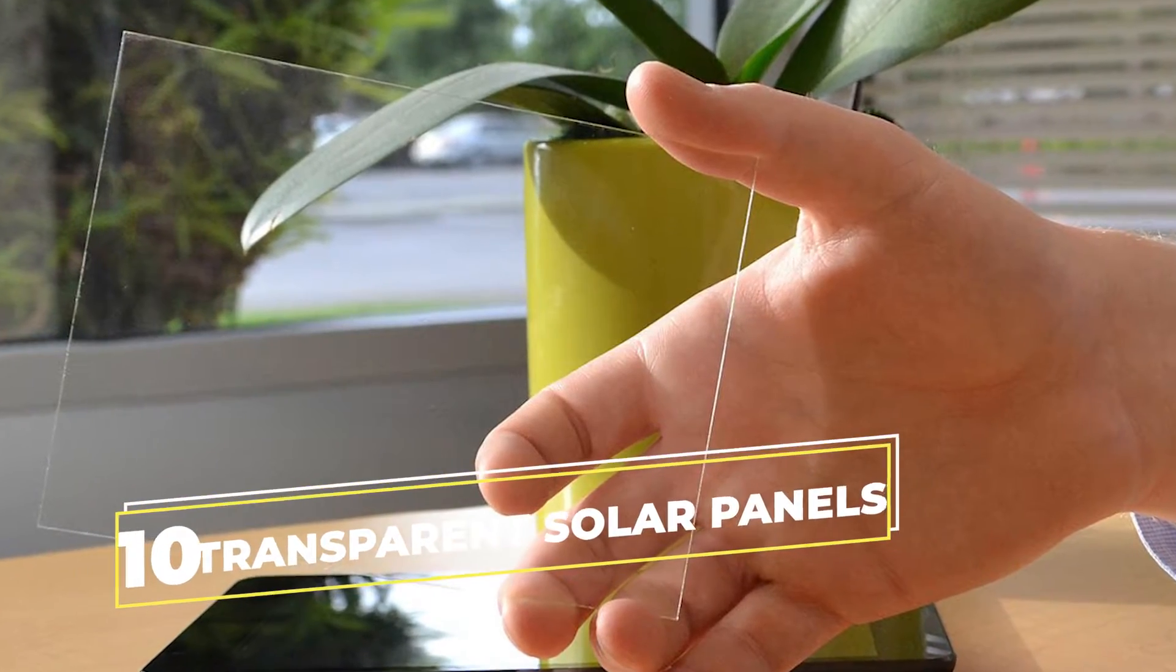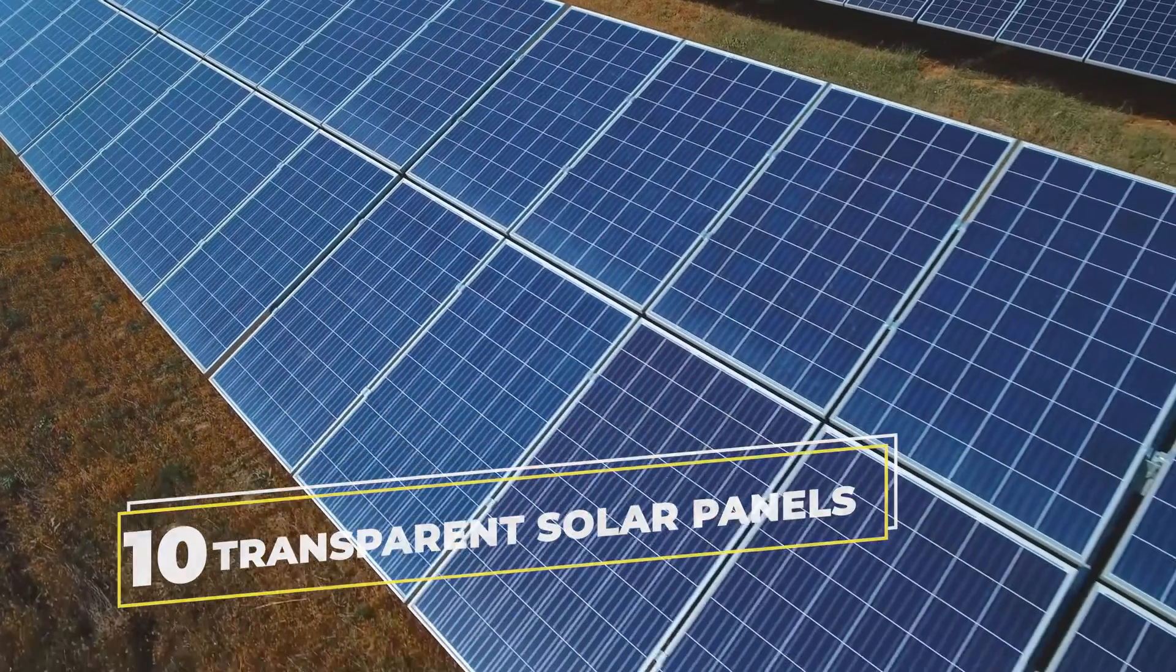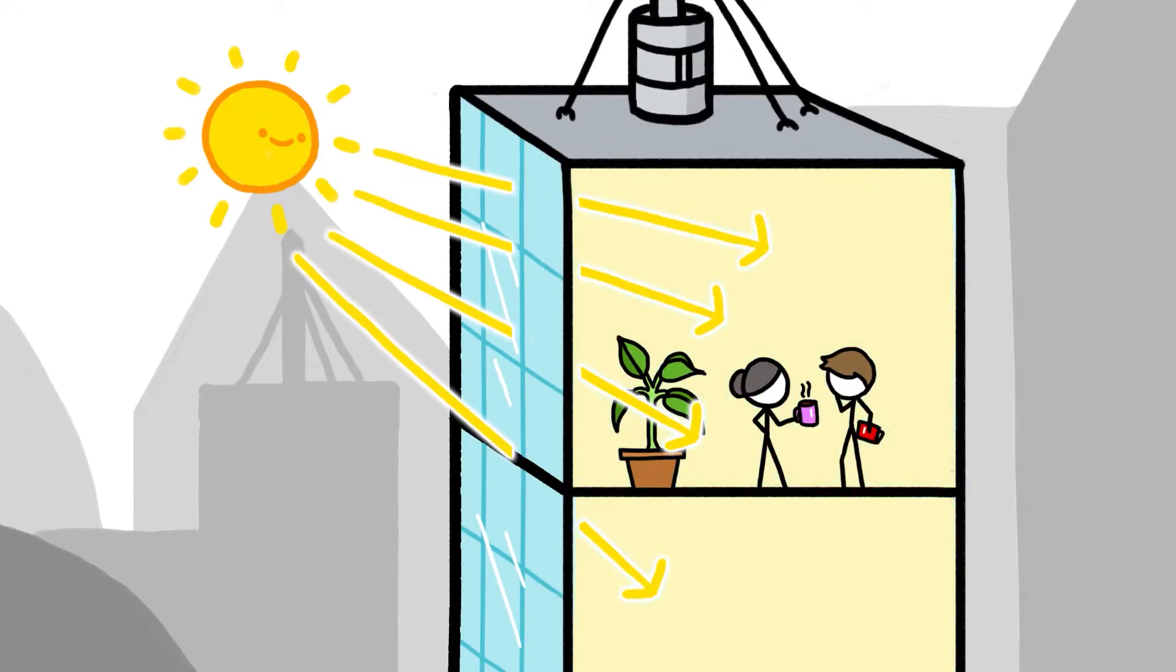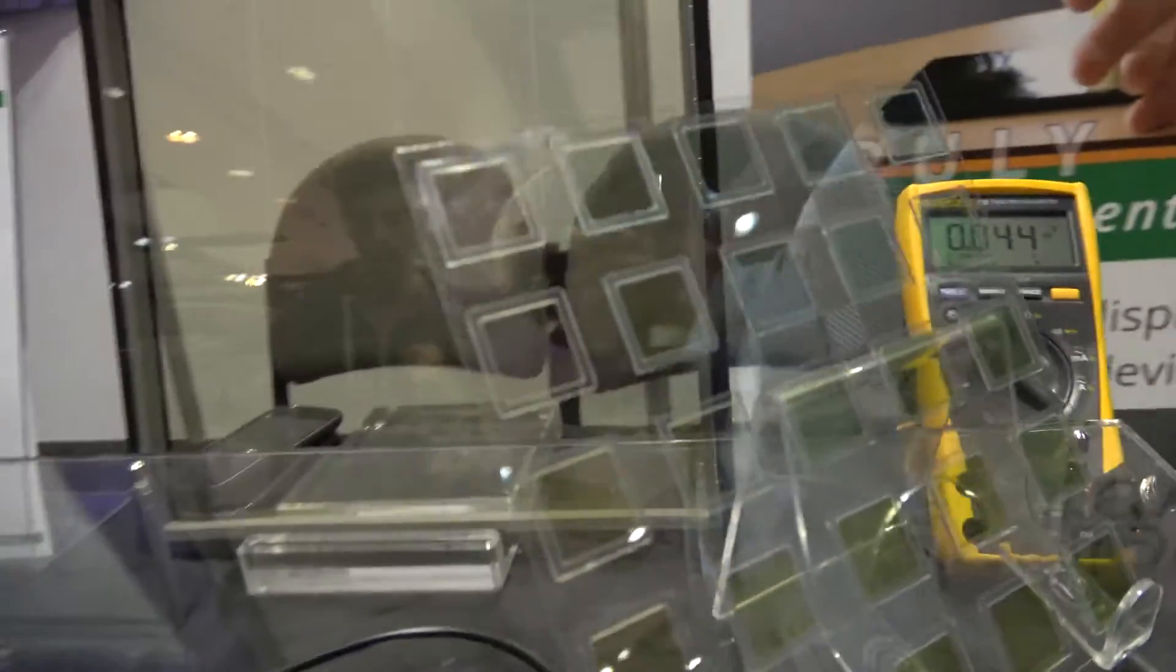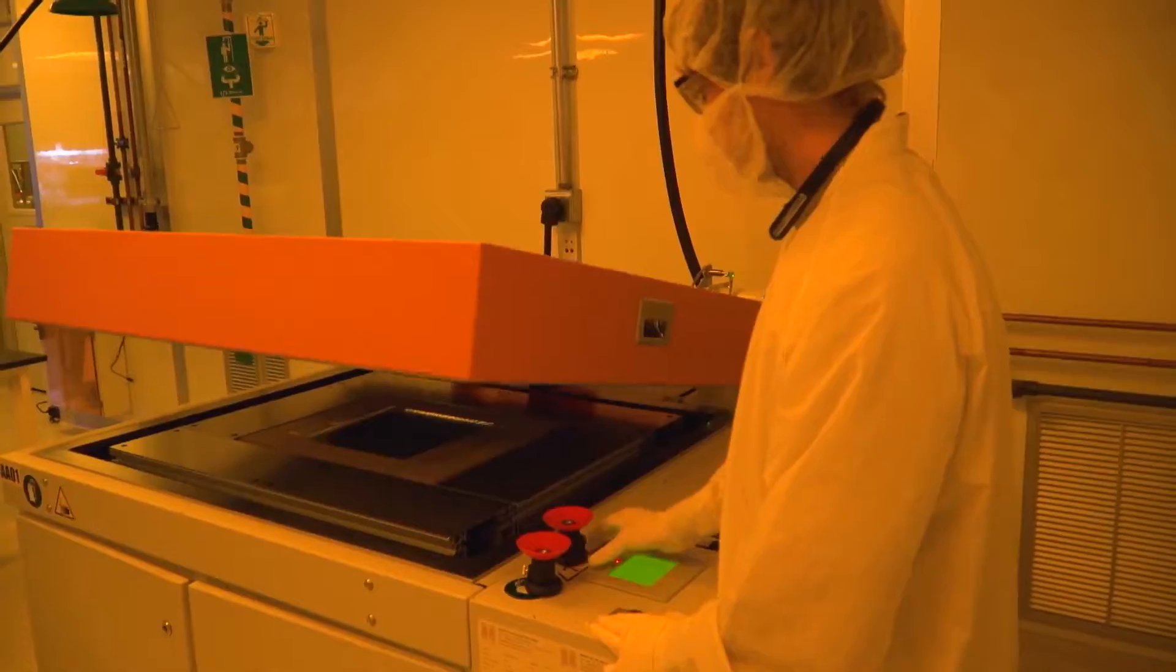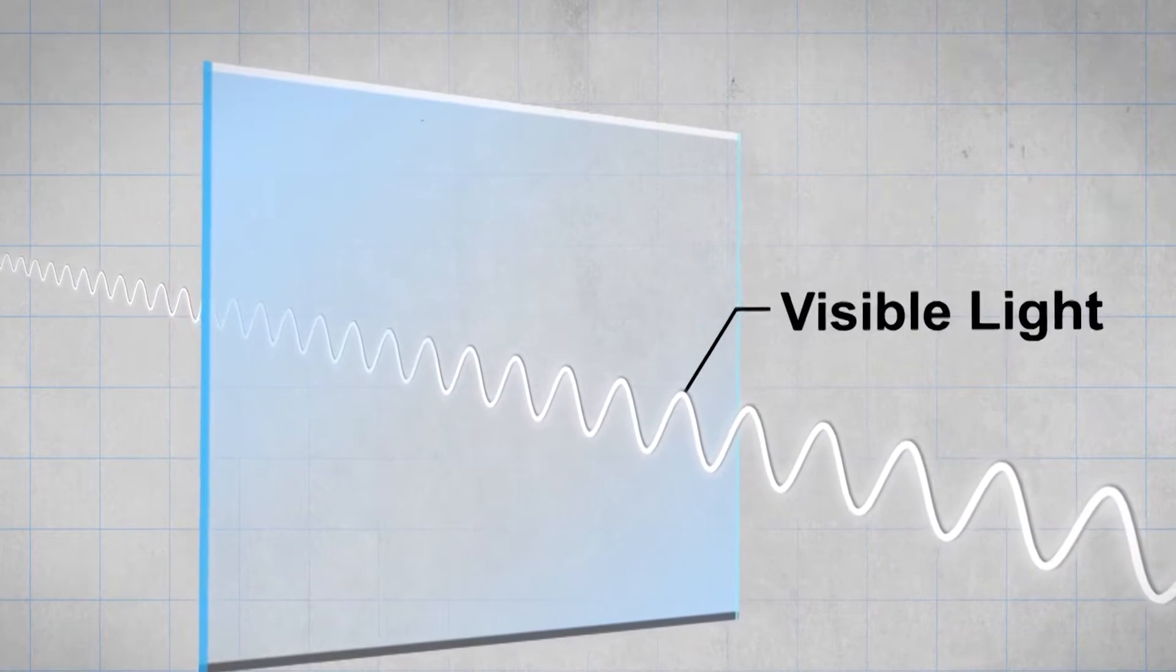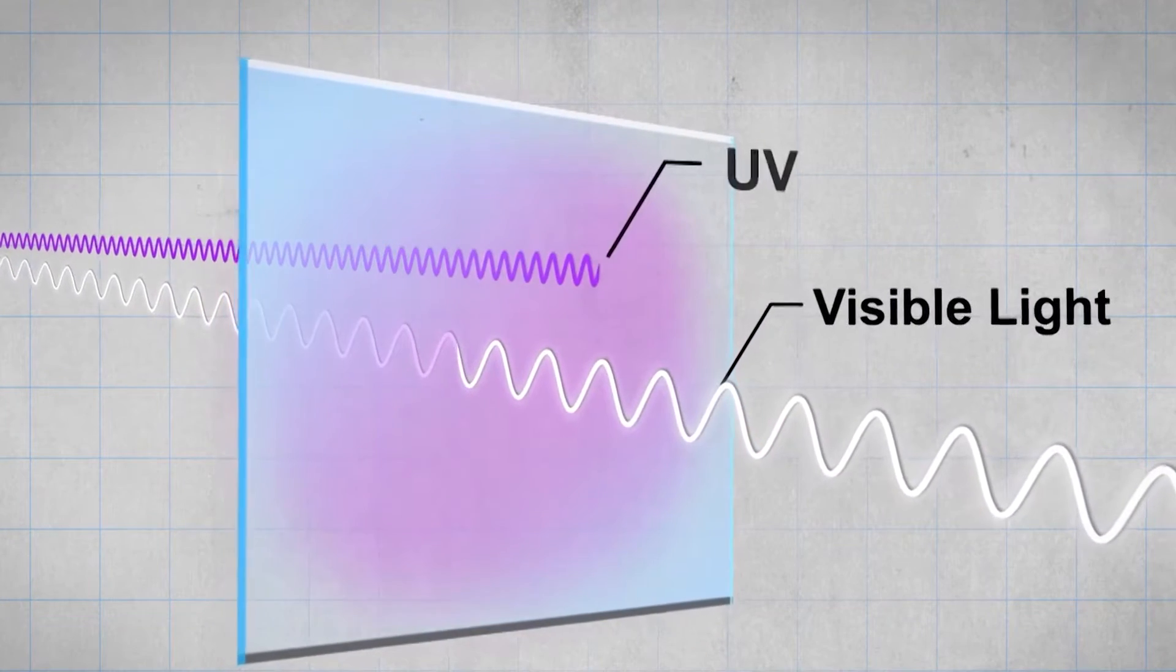At number 10, we have Transparent Solar Panels. These are no ordinary solar panels. These extraordinary panels permit the passage of visible light and instead use ultraviolet and infrared light to generate power. Invented at Michigan State University, these transparent luminescent solar concentrators have been created out of organic salts that absorb specific non-visible wavelengths.